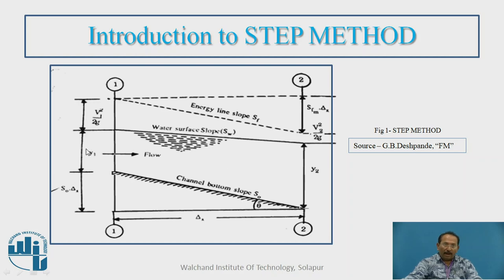Here it is Y1, that is above channel bottom up to water surface, the depth is Y1, Y2. This is depth of water at section 1, depth of water at section 2. This is a kinetic head, V1 square upon 2G, here also the kinetic head.